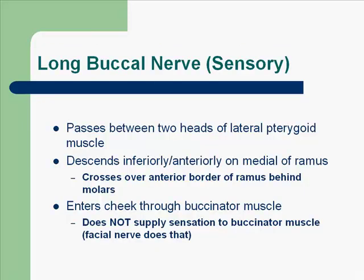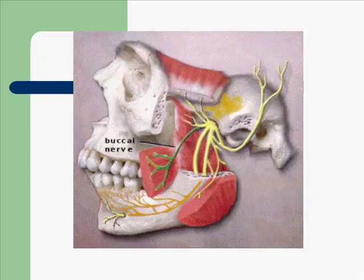The long buccal nerve is a sensory nerve, sometimes called simply the buccal nerve. It passes between the two heads of the lateral pterygoid muscle, descends inferiorly and anteriorly on the medial aspect of the ramus, then crosses over to the anterior border of the ramus behind the molars. This nerve enters the cheek through the buccinator muscle but does not supply sensation to the buccinator muscle — the facial nerve does that.